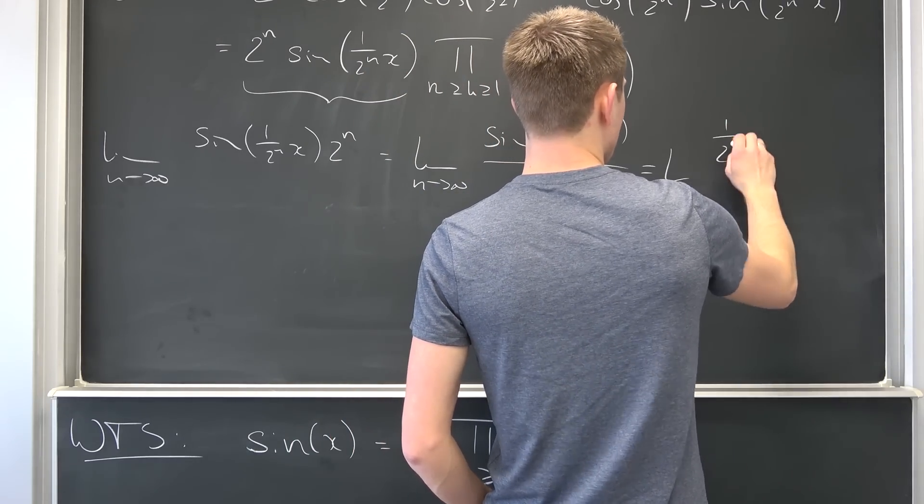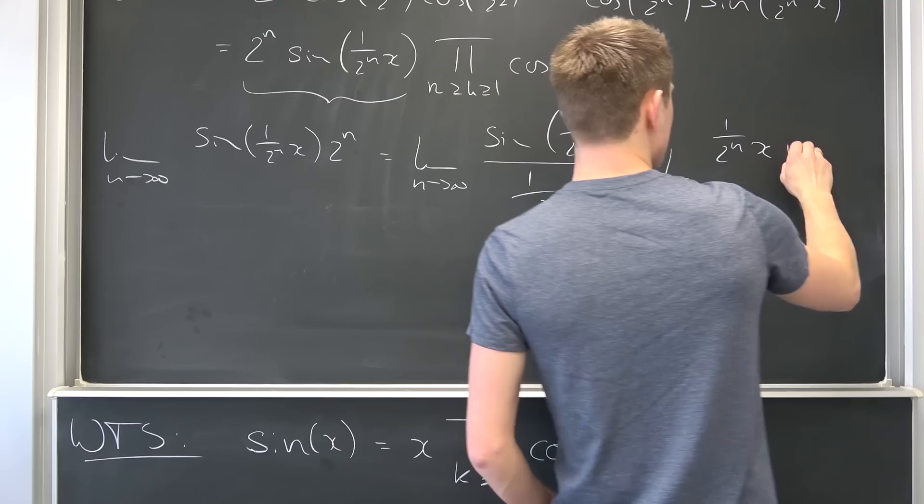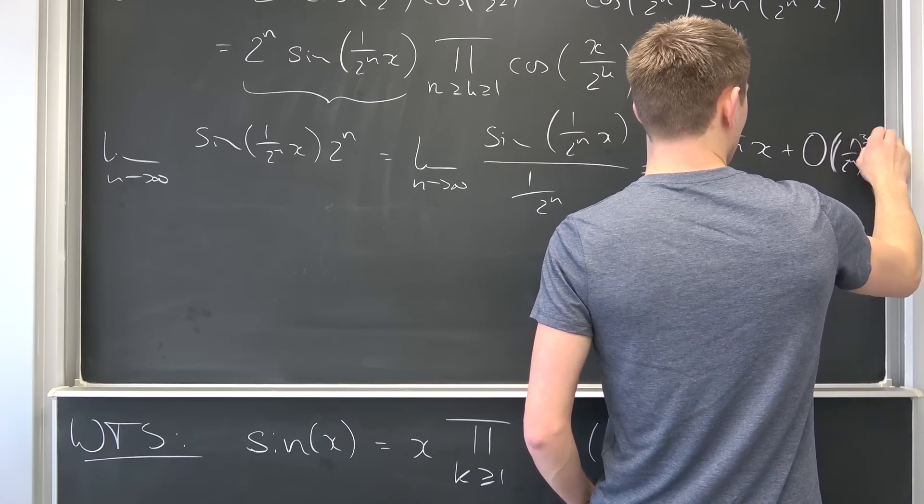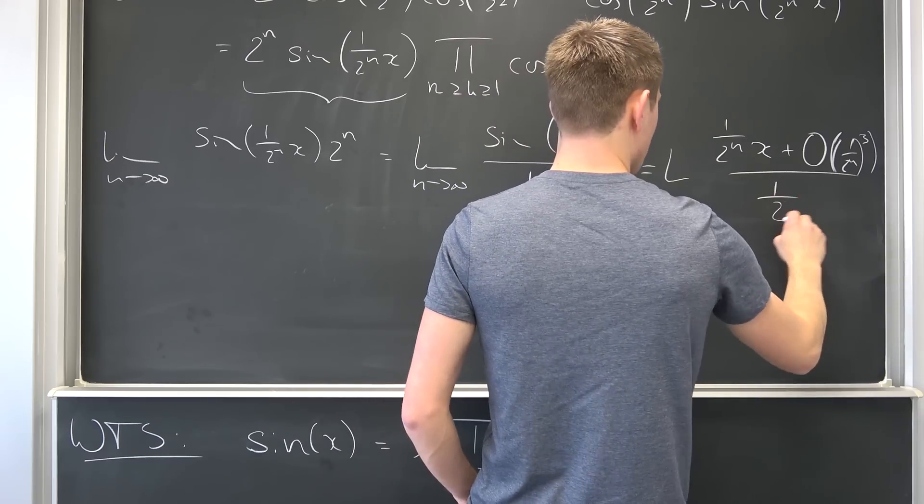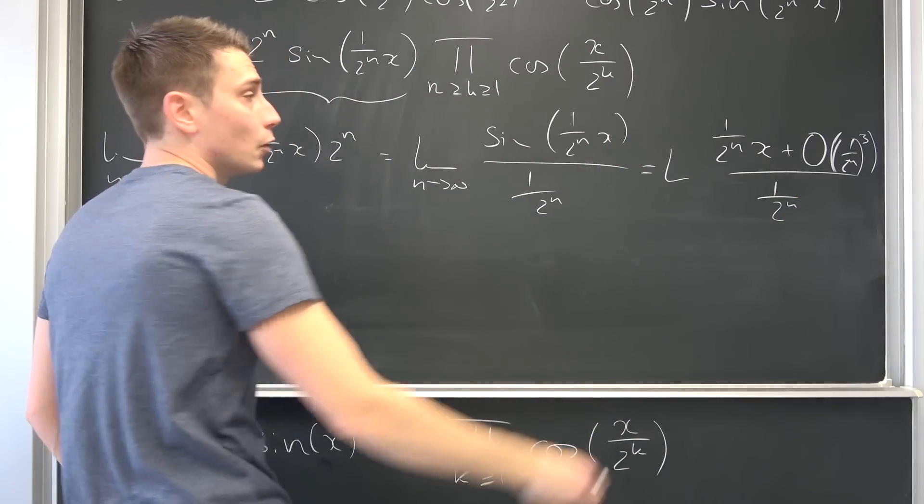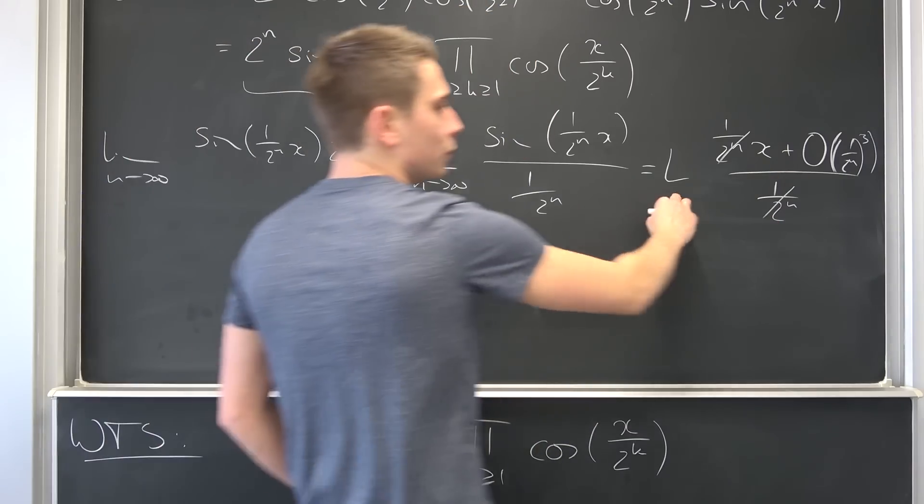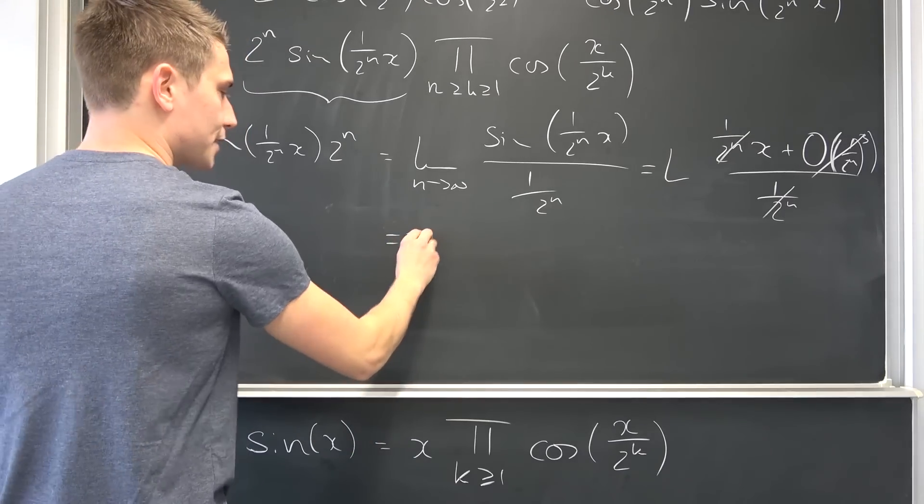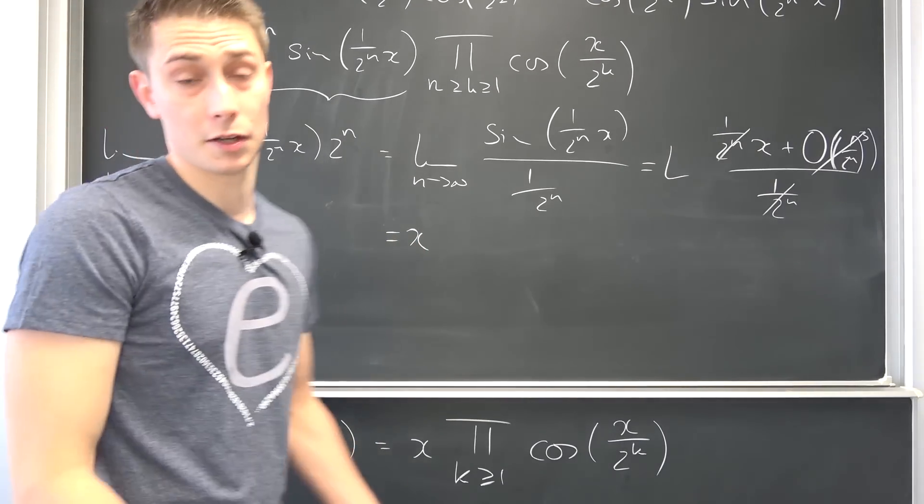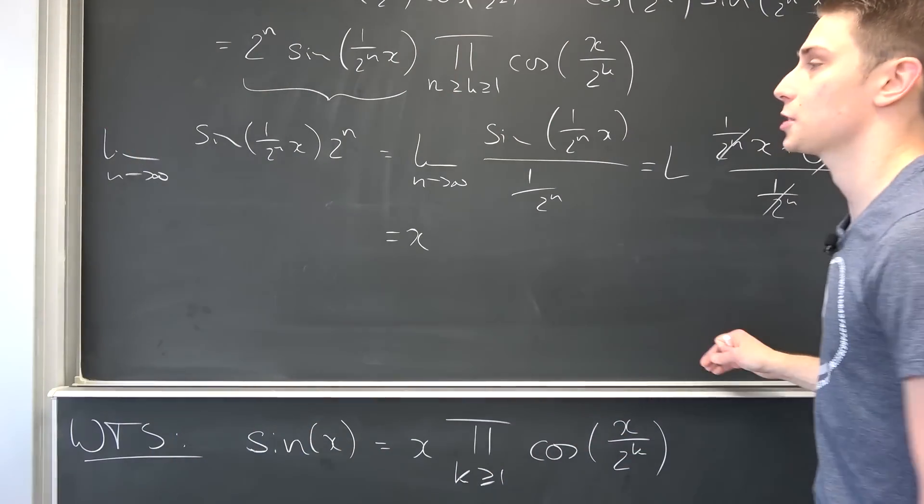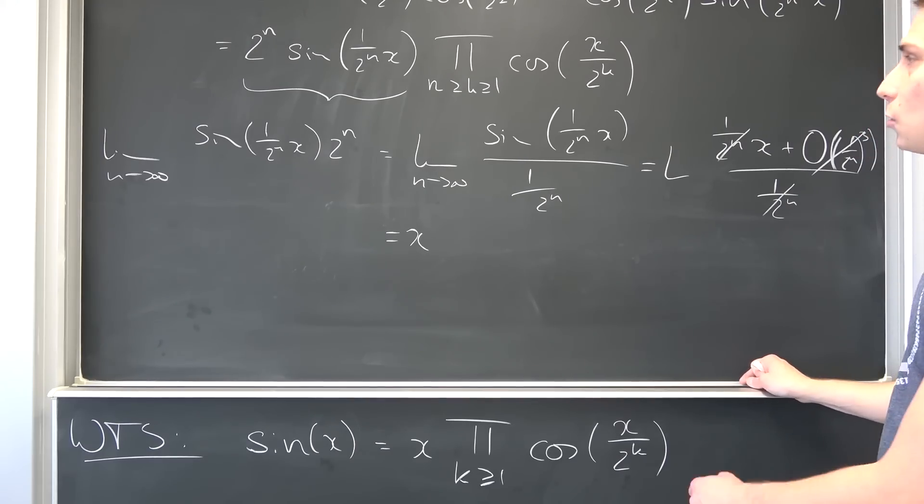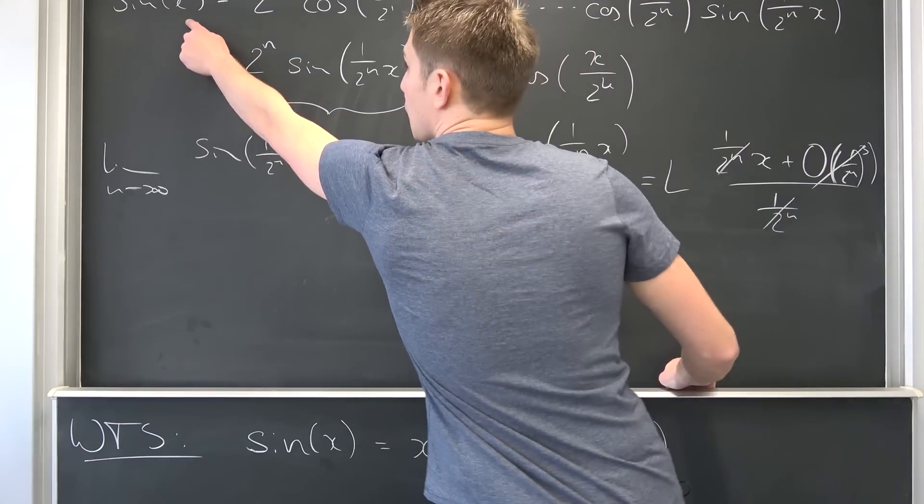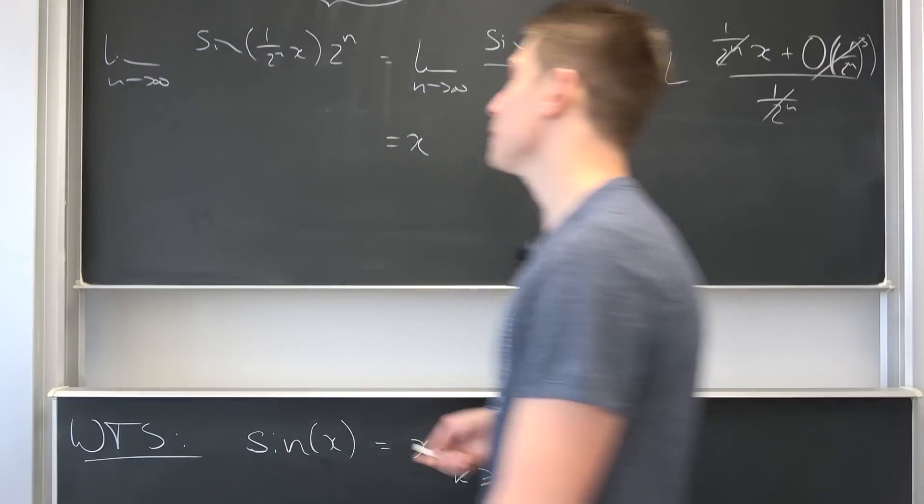You can justify this more rigorously by saying, like I said, big O notation, so L capital L is simply the limit, and we are going to have, and this is going to give us 1 over 2 to the nth power times x plus O, and then 1 over 2 to the nth power to the third power, over 1 over 2 to the nth power. Meaning overall this and that is going to cancel out. When n goes to infinity all of those O's go to 0 and we are going to be left with simply x. You can justify this small approximation in the limit more rigorously using Taylor series and big O's.